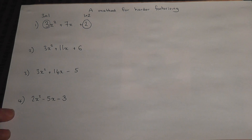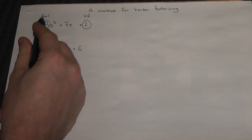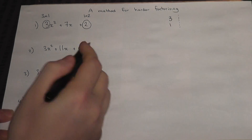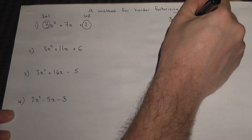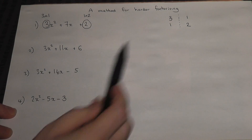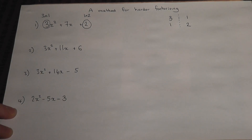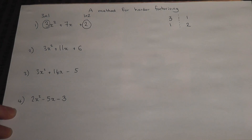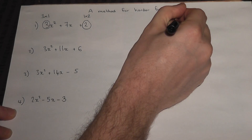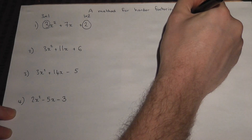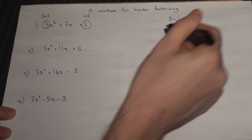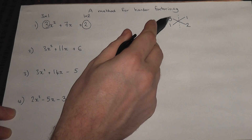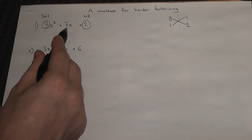To factorise it we use the following method. We put these two numbers here in a column and then we put these two numbers next to it also in a column, and we try to pair the numbers off to make 7. If I do 3 times 1 and 1 times 2, 3 plus 2 is 5, not 7. But if I do 3 times 2 and 1 times 1, 3 times 2 is 6, 1 times 1 is 1, and 6 plus 1 is 7. So this pairing off gives us a 7 as required.